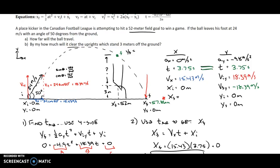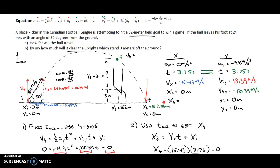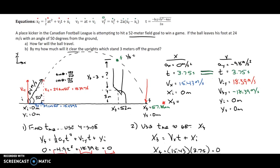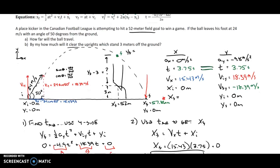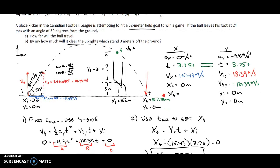That clearance is going to be equal to whatever we get for Y final minus the 3 meters that it's elevated. When we use these kinematic equations, we can find the location, speed, or time at which an object is at any point along this path. So instead of finding the final position on the ground, we're going to look for it when it's at an X position of 52 meters.